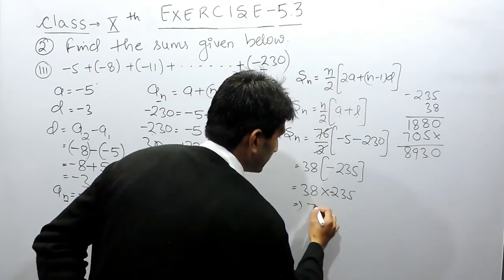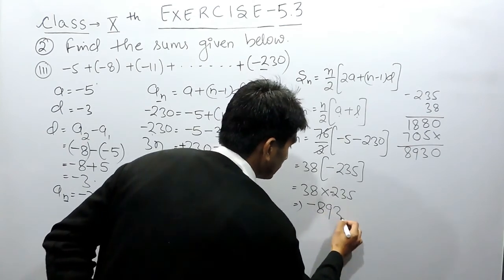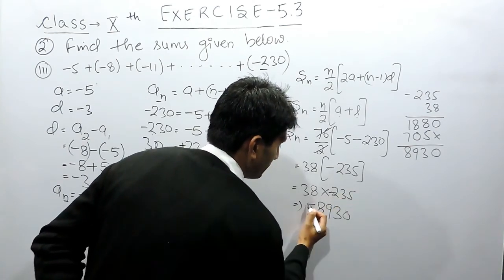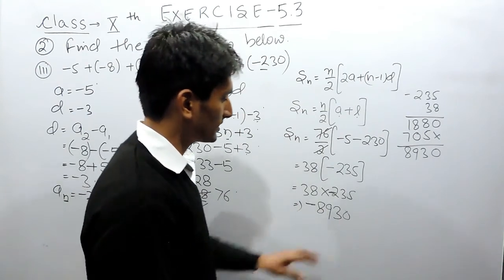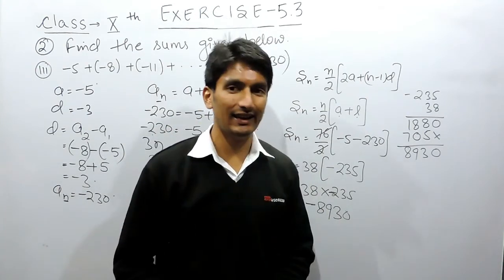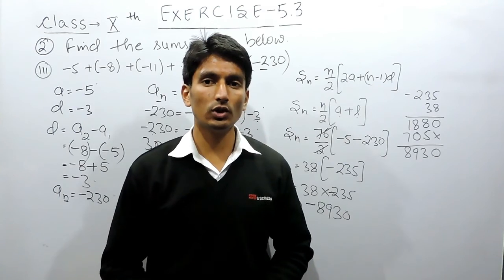So the answer will be -8930. This minus will be as it is. So the sum of the series in this case is -8930. This is how you can solve this question.